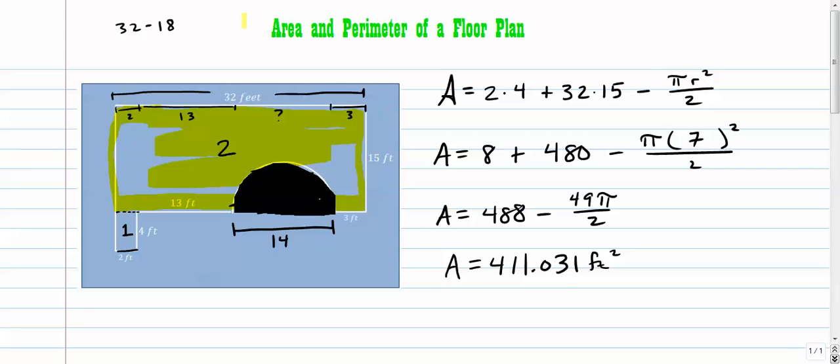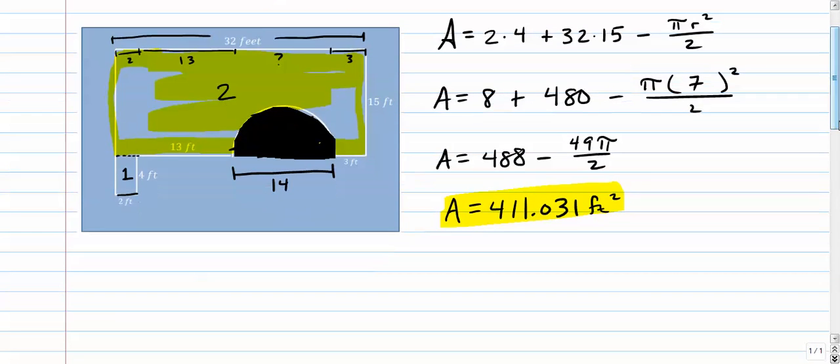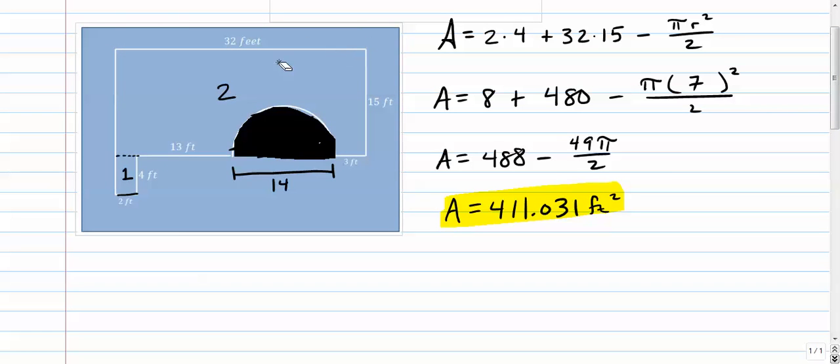So that area is one of the first ones we've been looking at here that involves a little bit of subtraction as well. So let's erase all this stuff. We don't need any of that stuff anymore. And we'll just go ahead and calculate the perimeter.